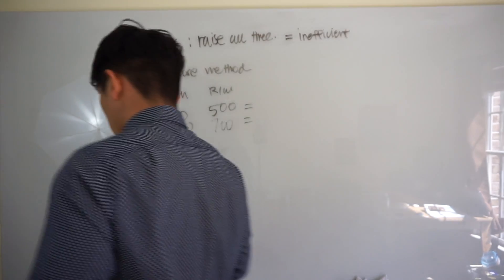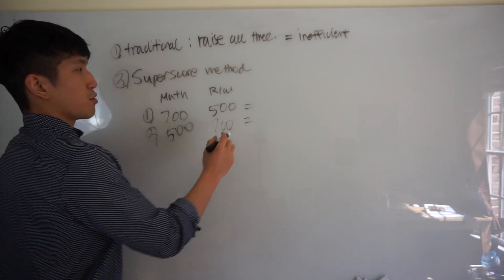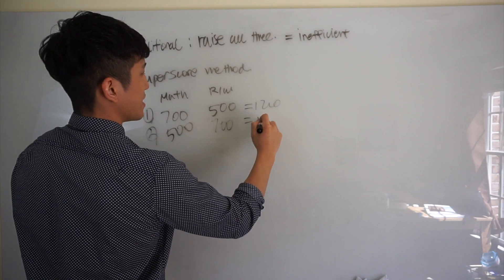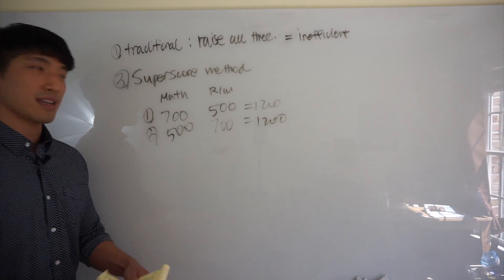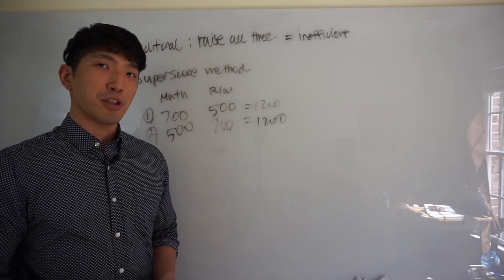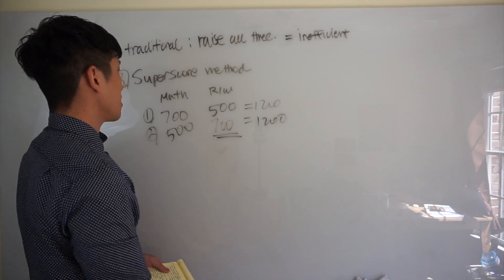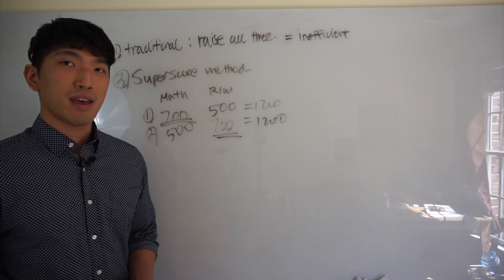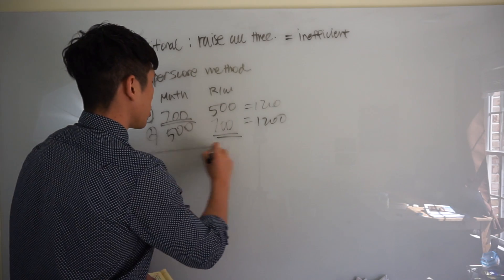So if you look at the overall scores, for the first exam, total score is 1200 and it's the same for the second exam as well. But thing is, for the second exam, you did really well on reading and writing. For this exam, you did really well on math.